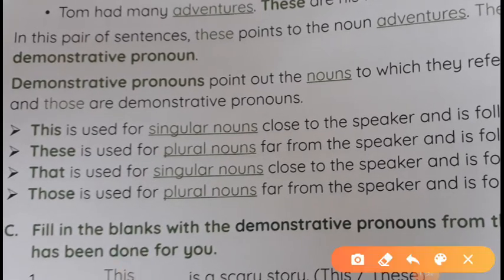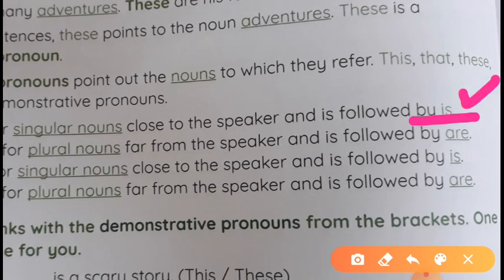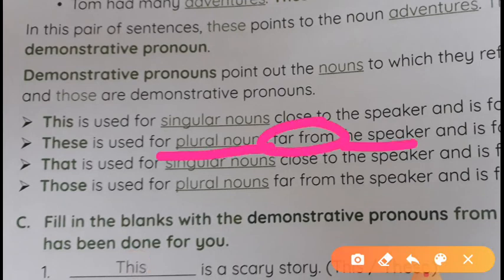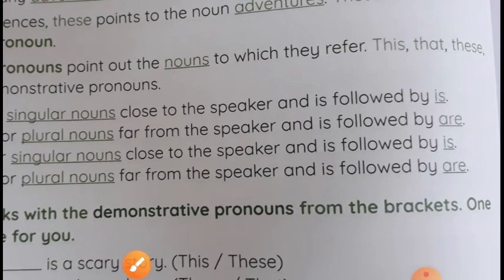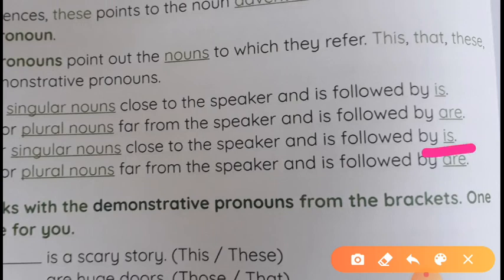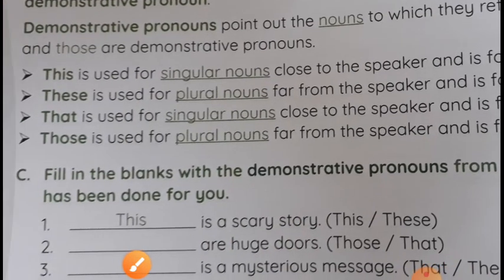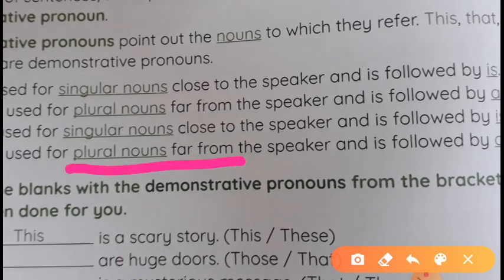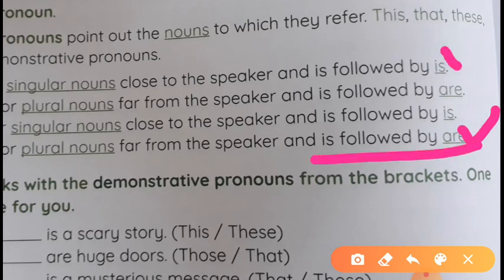'This' is used for singular — correct. Close to the speaker — correct. Followed by 'is' — correct. 'These' is used for plural — correct. But it says 'far from the speaker' — that is wrong; it should be 'close to the speaker.' Followed by 'are' — correct. 'That' is used for singular nouns — correct. Far from the speaker — correct. Followed by 'is' — correct. 'Those' is used for plural nouns, far from the speaker, and followed by 'are' — correct. So 'these' in the book has a printing error; it should say 'close to the speaker,' not far.